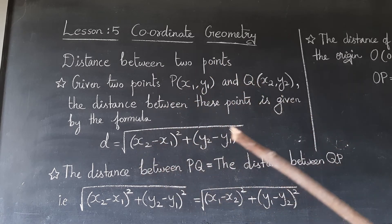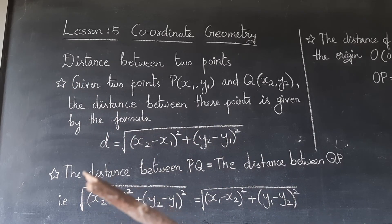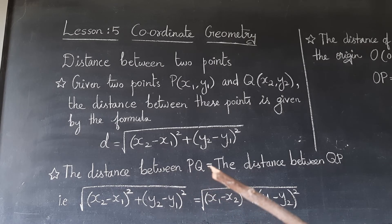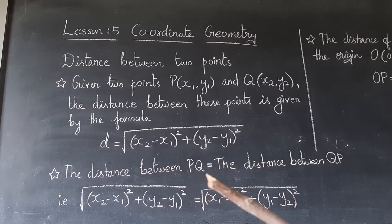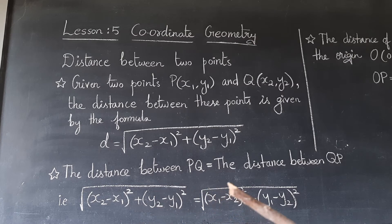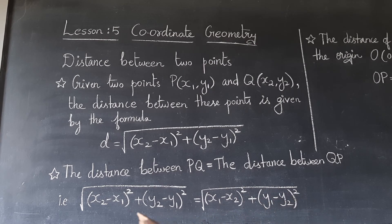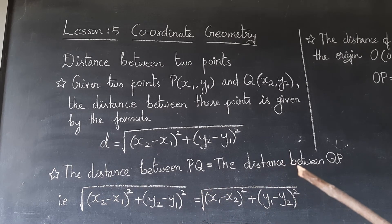The distance between two points P and Q equals the distance between Q and P — both are equal. That is: √[(x2−x1)² + (y2−y1)²] = √[(x1−x2)² + (y1−y2)²]. This is because squaring a negative gives the same result as squaring a positive. So distance PQ equals distance QP.